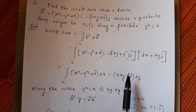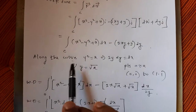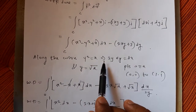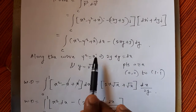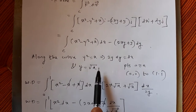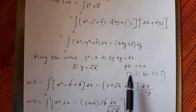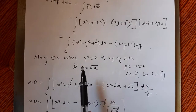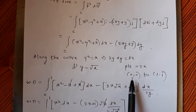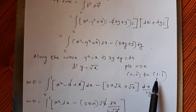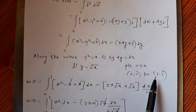I write the formula: work done = integration of vector F dot dr. Along the curve y² = x, differentiating gives 2y dy = dx. So y = √x, and the points go from (0,0) to (1,1), meaning x goes from 0 to 1. I replace all values of y in terms of x to convert the integral entirely in terms of x.